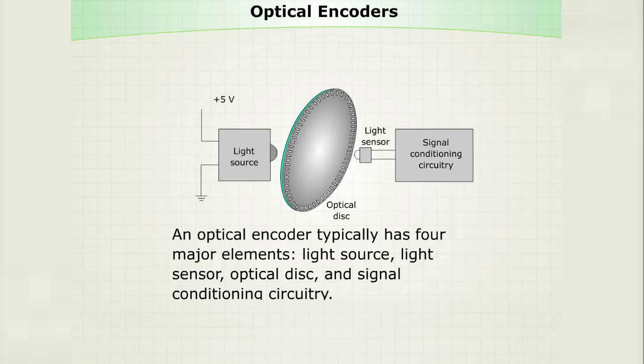An optical encoder typically has four major elements: light source, light sensor, optical disc, and signal conditioning circuitry.